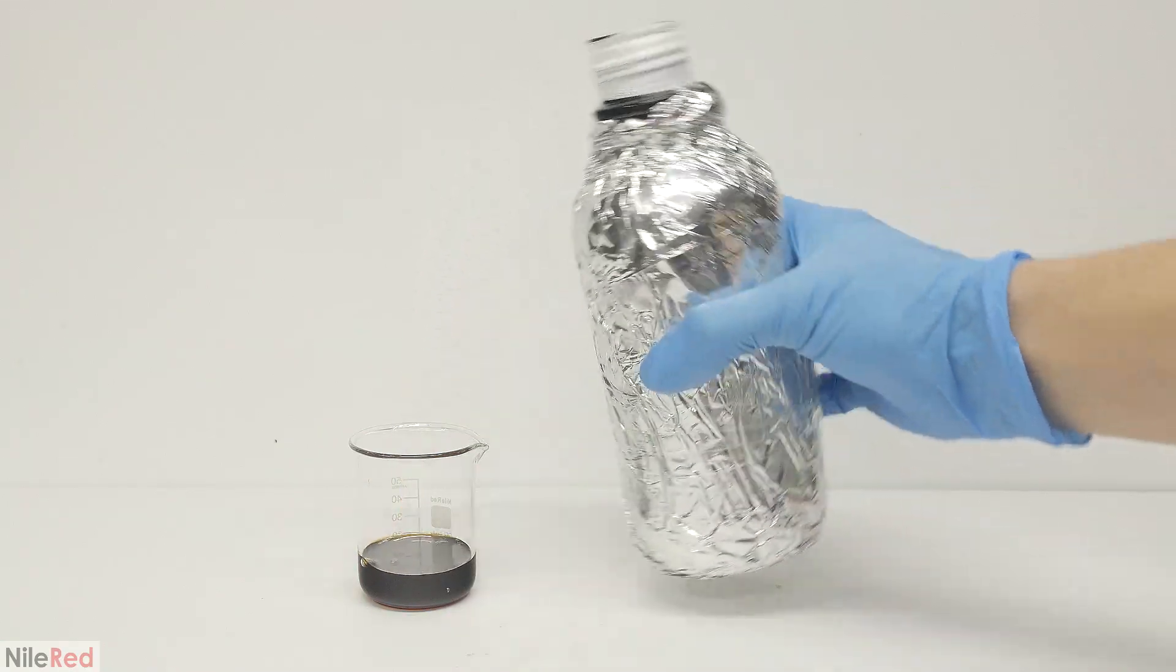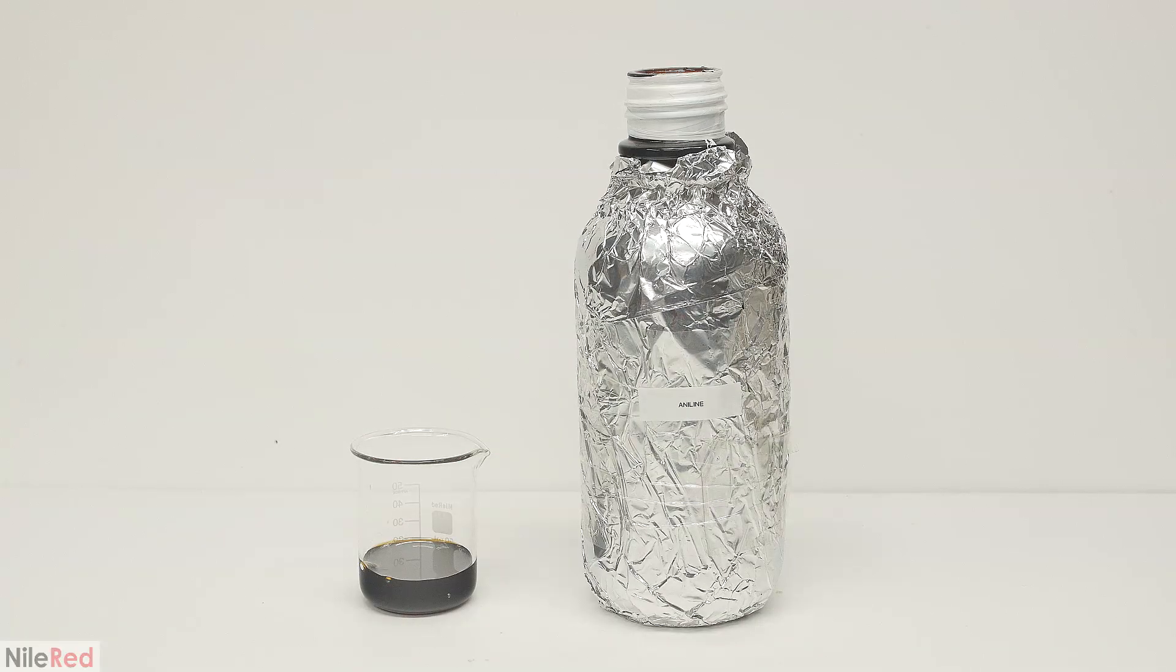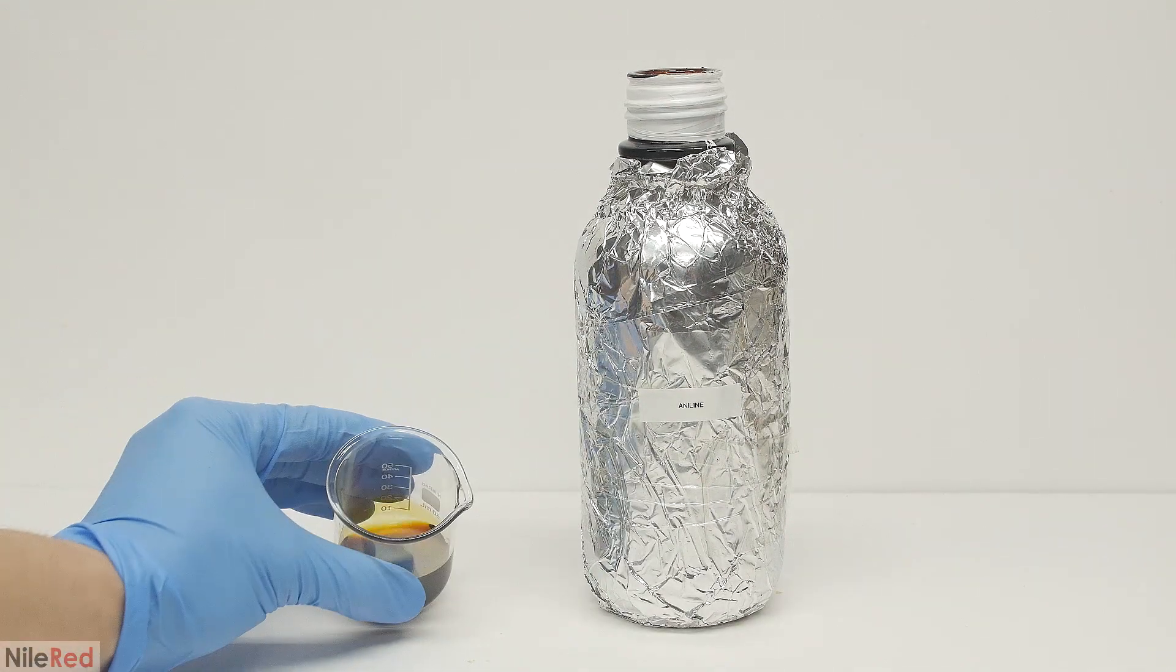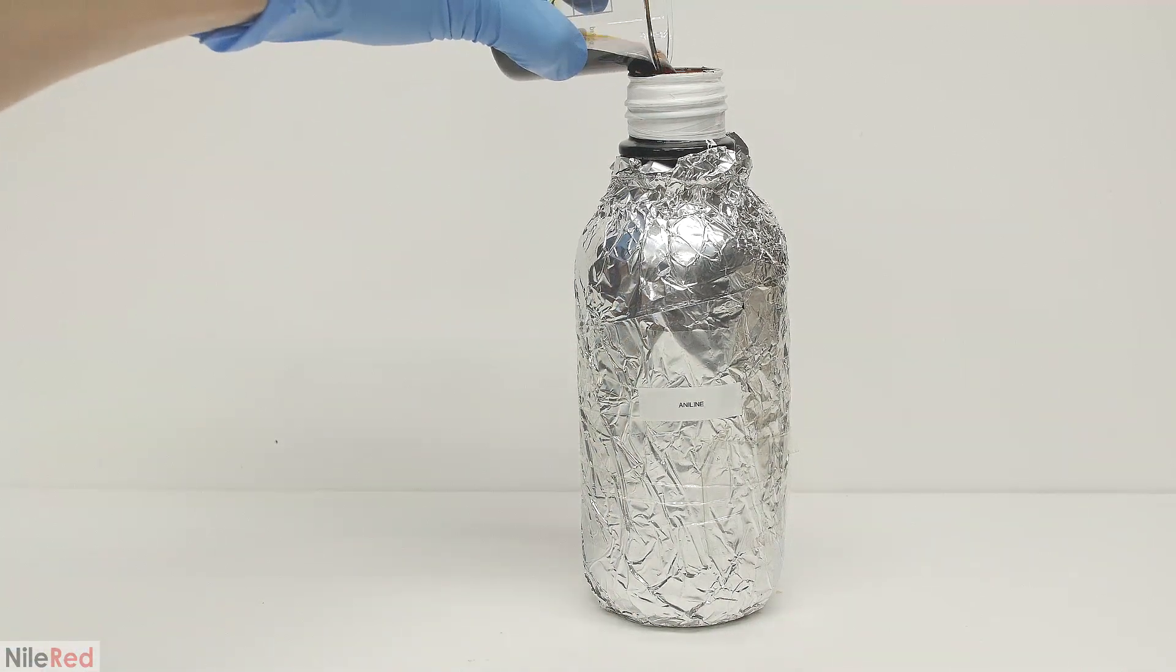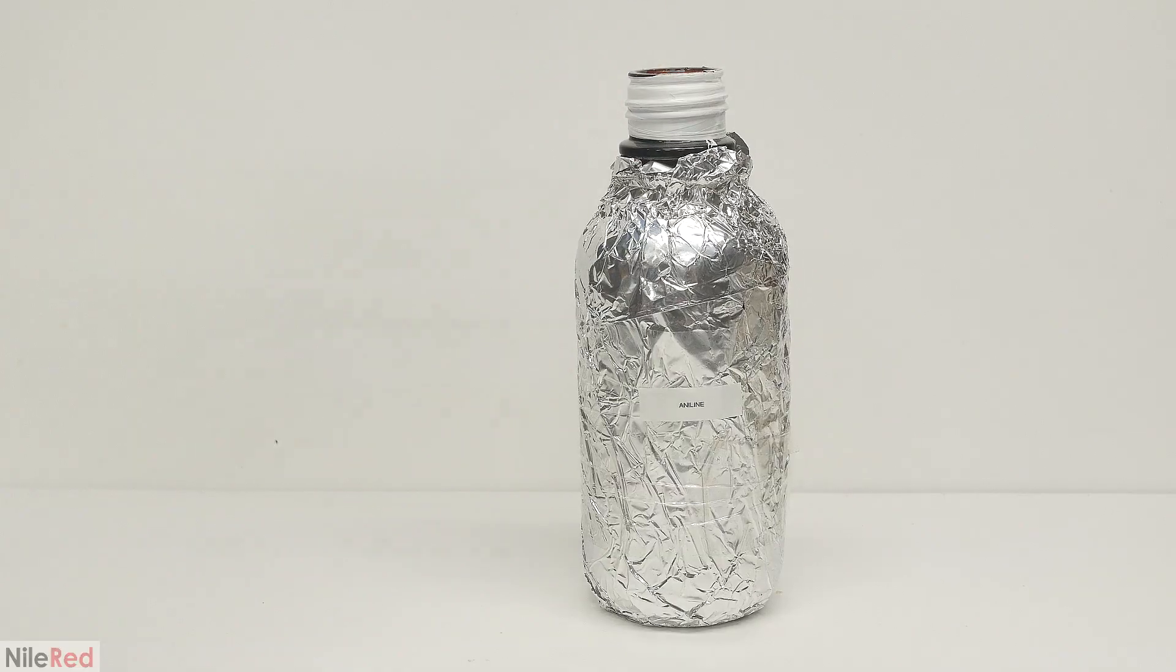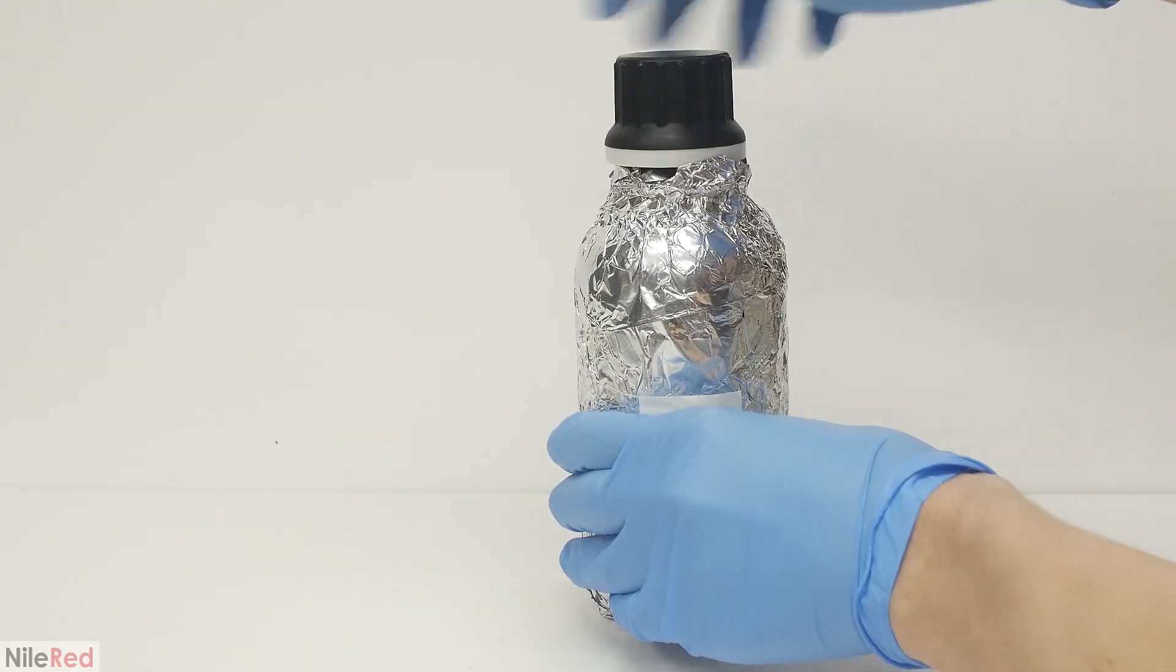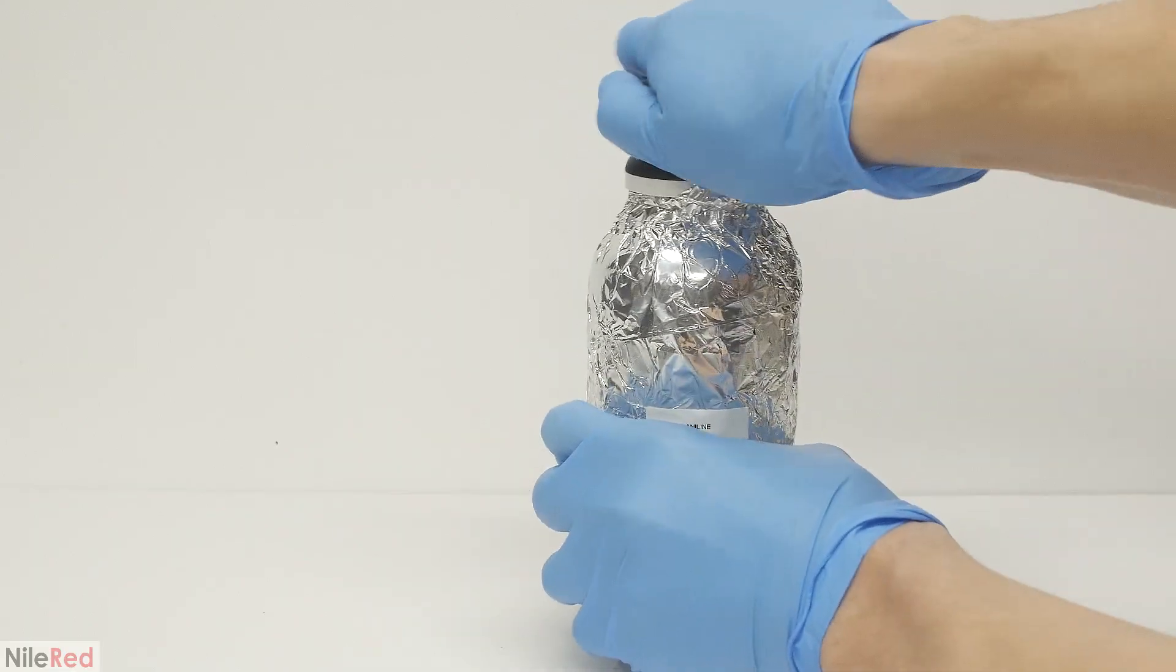Over time, and prolonged storage, aniline tends to degrade, so before I get started, it's a good idea to check the quality of it. When aniline is pure, it's either colorless or slightly yellow, but the stuff I have here is brown. Unfortunately, this means that it has degraded quite a bit, and before proceeding on, I need to purify it.